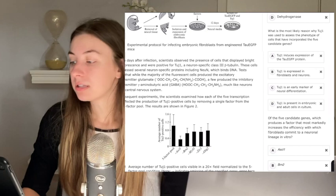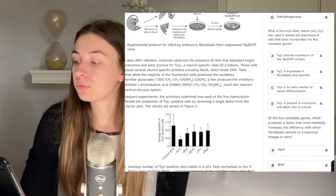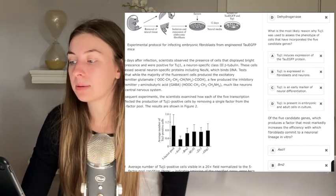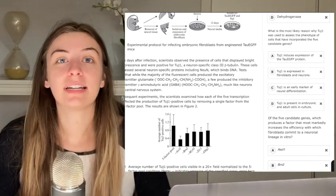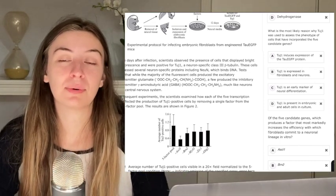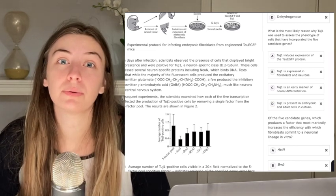Decarboxylase. What is the most likely reason why TUJ1 was used to assess the phenotype of cells that have incorporated the five candidate genes?